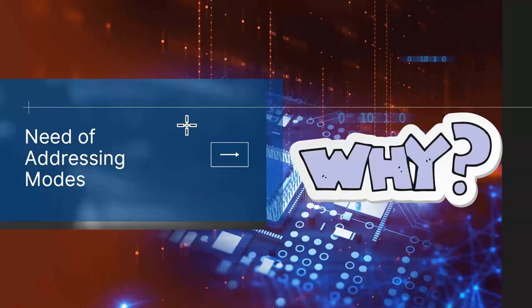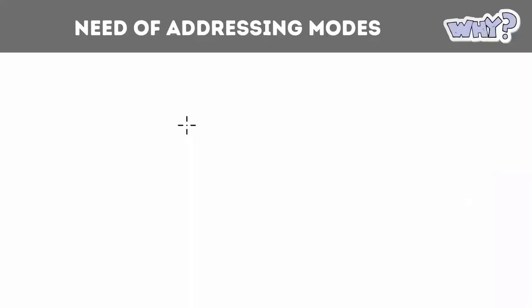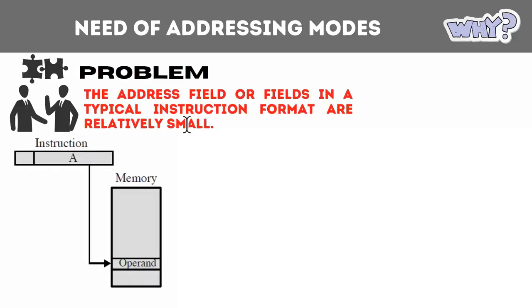Why do we require different kinds of addressing modes? Why not have a single addressing mode? Addressing modes are a solution to a problem. The problem is that the address field — all the fields in a typical instruction format — are relatively small. An instruction consists of different parts.